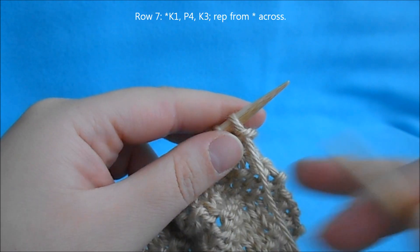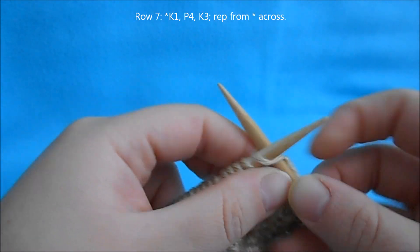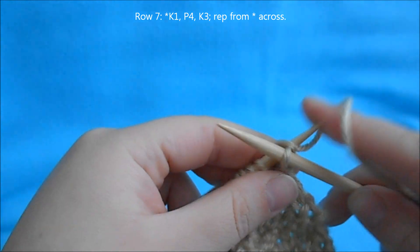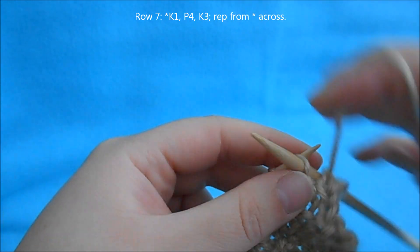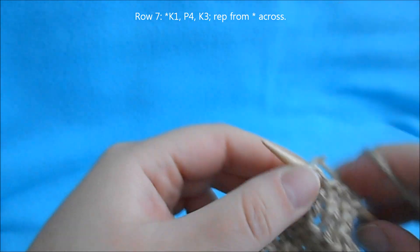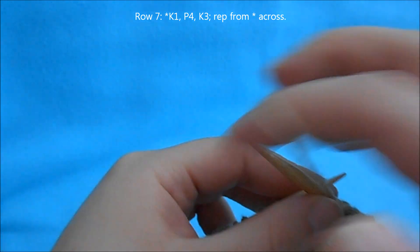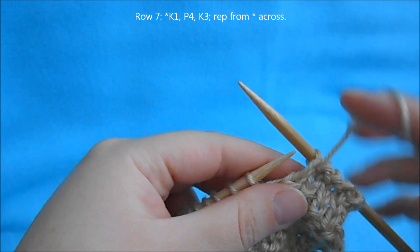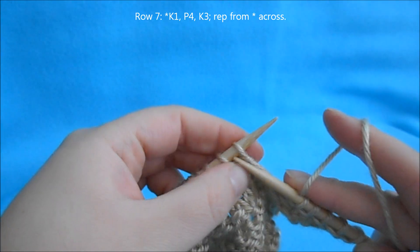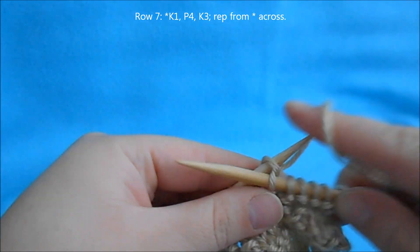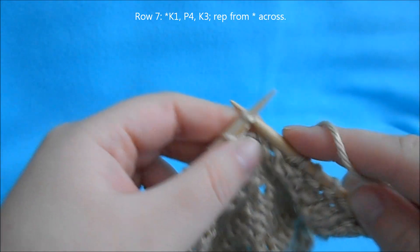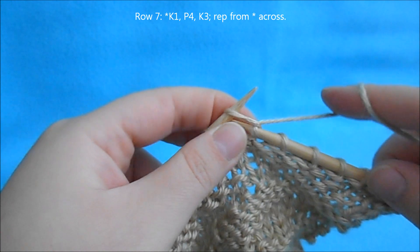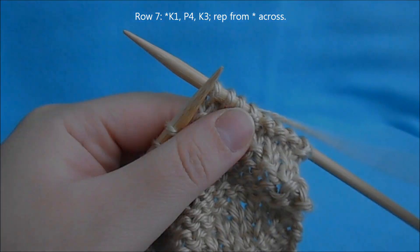For row 7, we're going to begin a repeat of knit 1, purl 4, knit 3, and repeat that across.